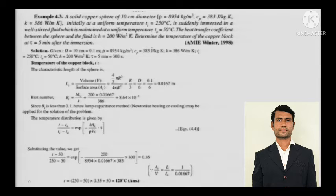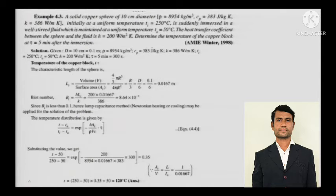A solid copper sphere of 10 centimeters diameter — density, specific heat, and thermal conductivity are given. Initially at a uniform temperature Ti of 250 degrees Celsius, it is suddenly immersed in a well-stirred fluid maintained at uniform temperature. The heat transfer coefficient H is given. Determine the temperature of the copper block at tau equal to 5 minutes after immersion. The time given in minutes has to be converted into seconds.